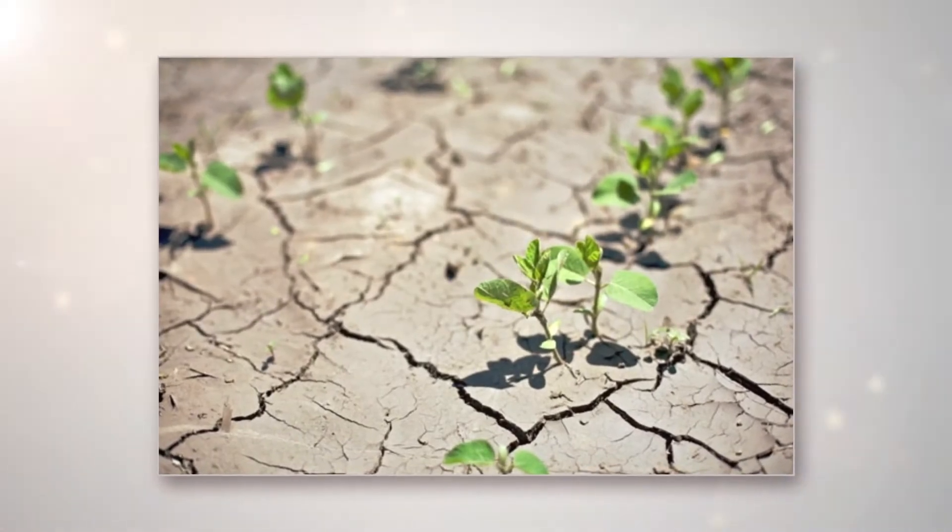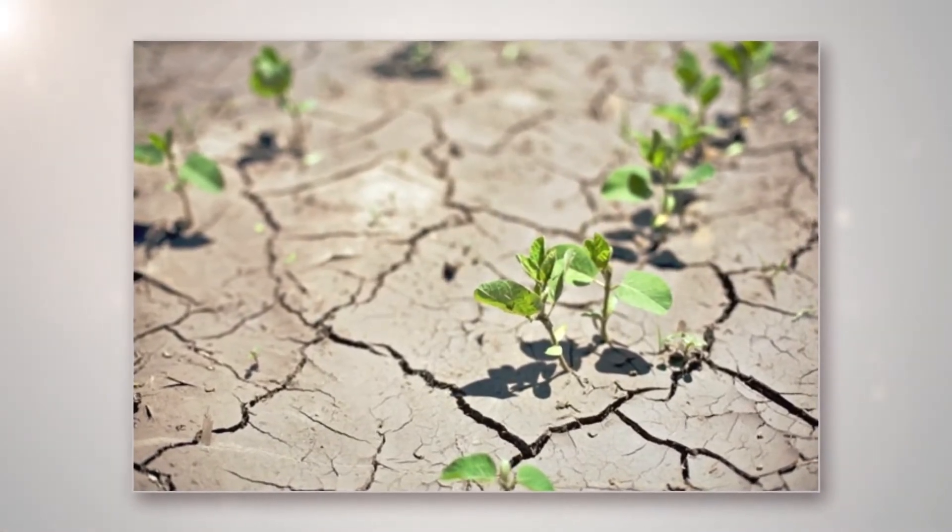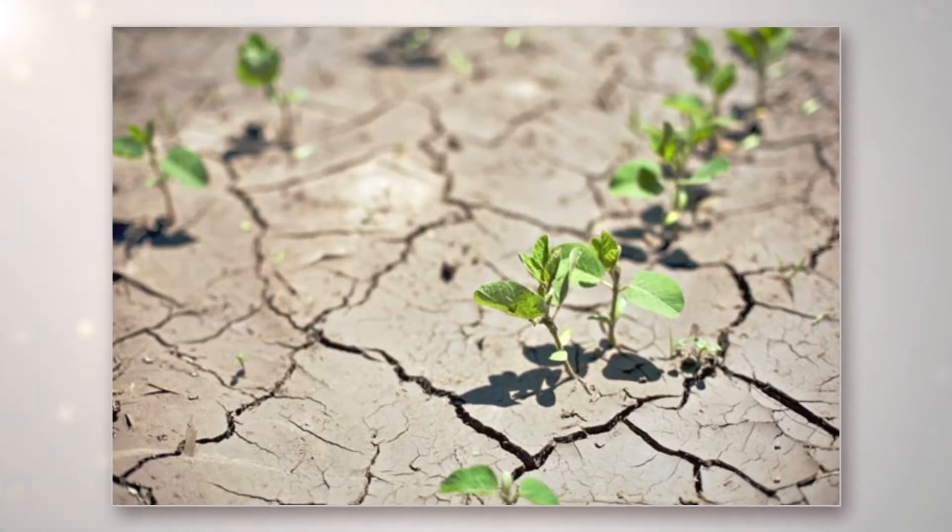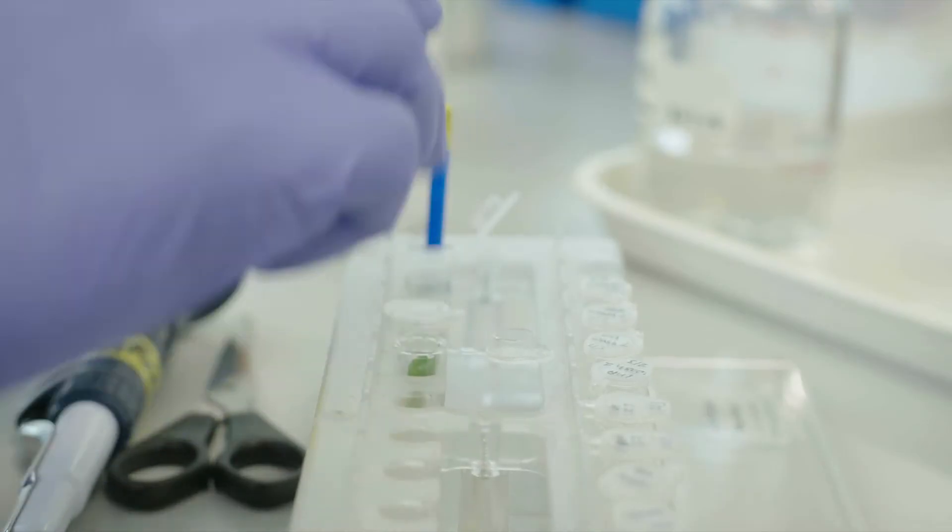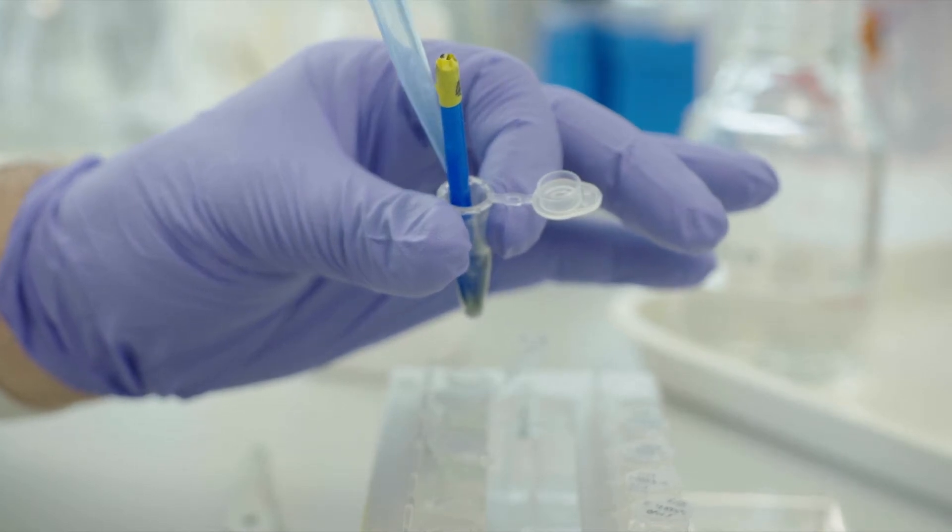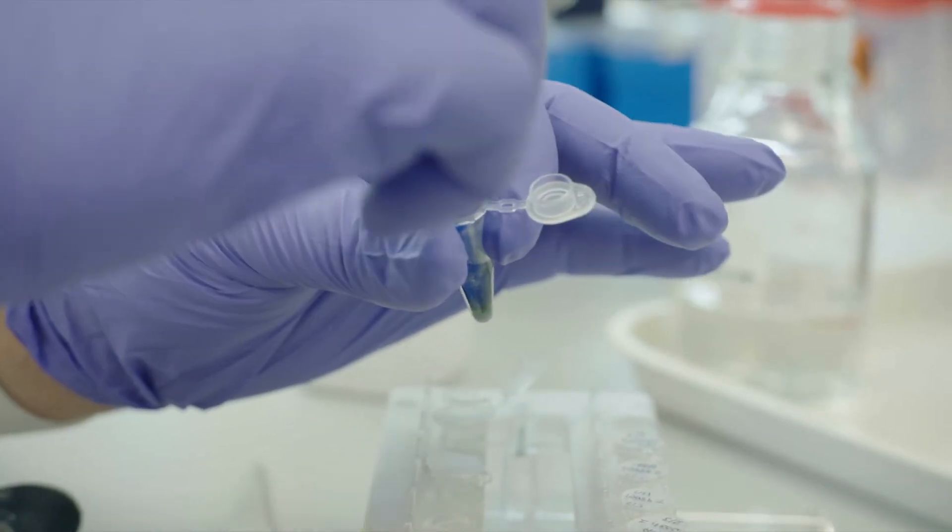For example, plants previously exposed to lack of water produce offspring better adapted to drought. Although plants do not have a brain, they have the capacity to record this information in their DNA by chemical modifications of the genome and transmit this information to the offspring.